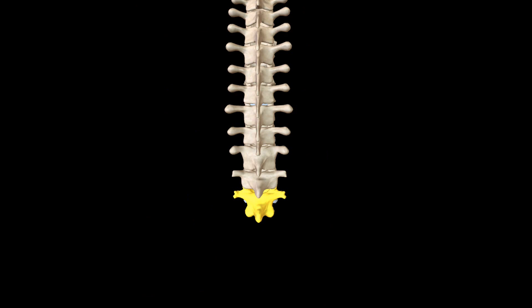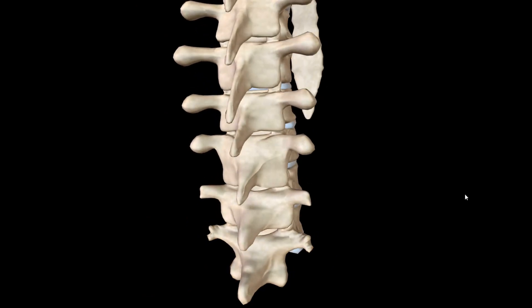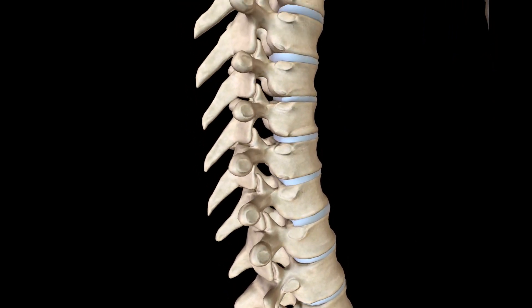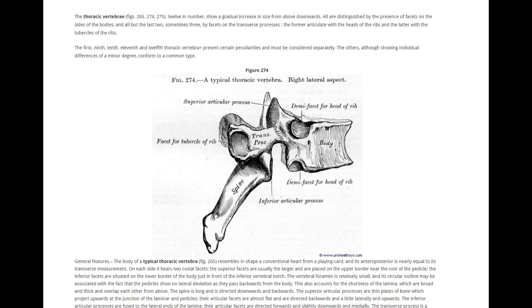T12 is highlighted here. Let's take a closer look. Thoracic vertebrae are distinguished from others by the presence of articulating facets on the sides of the bodies where articulation with the heads of the ribs will occur, and also facets on transverse processes where articulation with the tubercle of the ribs will occur. Now not all of the 12 thoracic vertebrae share exactly the same features, hence the name typical vertebrae and atypical vertebrae.